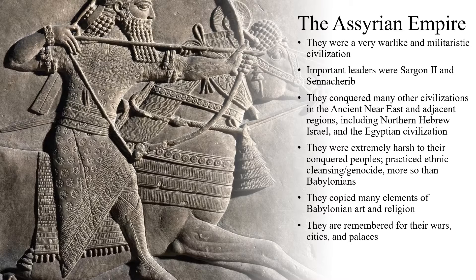Now we'll discuss the Assyrian civilization, which existed during the intermediate period between the Old Babylonian Empire of Hammurabi and the Neo-Babylonian Empire of Nebuchadnezzar. The Assyrian Empire shared many cultural similarities with the Babylonians, being that they were both Mesopotamian civilizations, but the Assyrian Empire was even more warlike than the Babylonians — they were a very warlike and militaristic civilization.